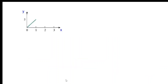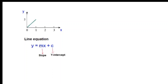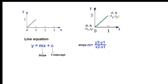First of all, we'll try to find or write the equation of this line. We know the line equation is written as y = mx + c, where m is called the slope and c is the y-intercept. The slope formula is y2 minus y1 divided by x2 minus x1. The starting point is marked as (x1, y1) and the end point as (x2, y2). So y2 is 5, y1 is 0, x2 is 1, and x1 is 0.